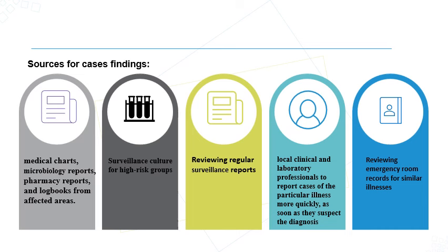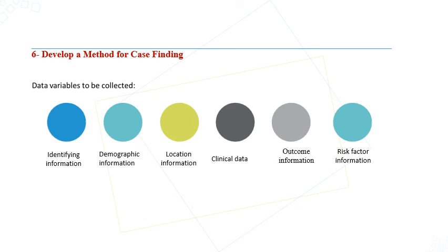Other case finding sources include surveillance cultures and screening for high-risk groups, reviewing regular surveillance reports periodically, local clinical laboratory professionals reporting cases of a particular illness, and reviewing other records such as emergency room records. Data variables to collect include identifying information (patient name), demographic information, location of cases, clinical signs and symptoms, outcome information, risk factor information, and additional variables identified from the literature review.